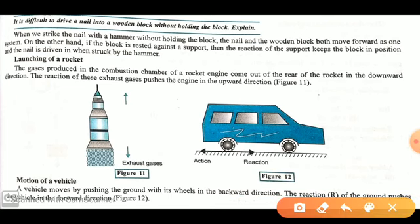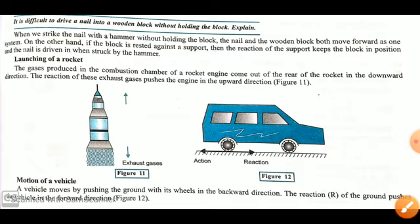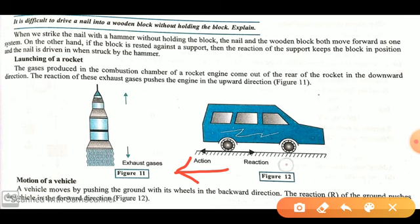The launching of a rocket is also based on Newton's third law. Inside the rocket there is fuel; when that fuel is burnt, exhaust gases are expelled into the atmosphere. These exhaust gases act as the action force, and the reaction force in the reverse direction is responsible for the forward motion of the rocket. Similarly, for a vehicle, the tires push the ground backward and the ground gives a reaction force that is responsible for the vehicle's forward motion.